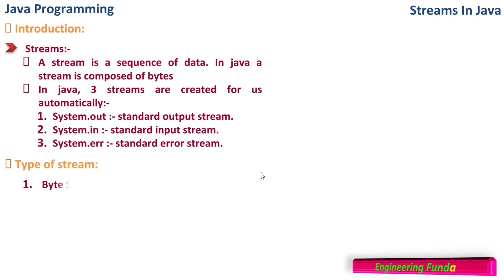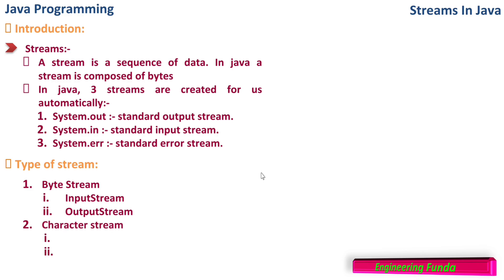As we know, the types of streams: there are two. First is the byte stream — InputStream and OutputStream — and second is the character stream, which is the Reader and Writer. Here the Reader is similar to InputStream and Writer is similar to OutputStream, but there is a technical difference that we are going to see in this video.